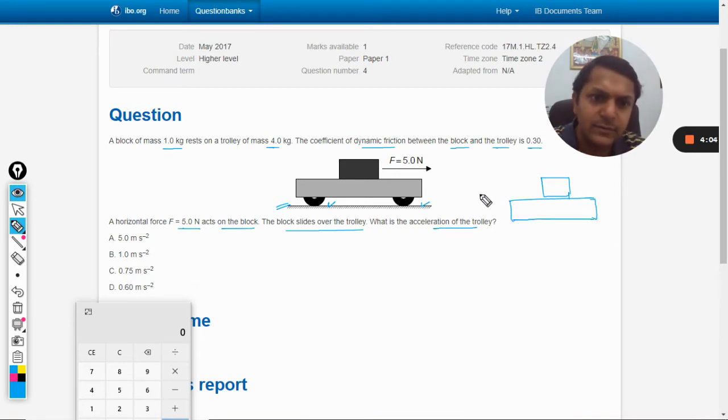The weight of this is 1 kg and this is 4 kg trolley. So there is a force that is acting here, 5 newton. First of all, because there is a relative motion between the block and the trolley, there will be kinetic friction or dynamic friction acting here.